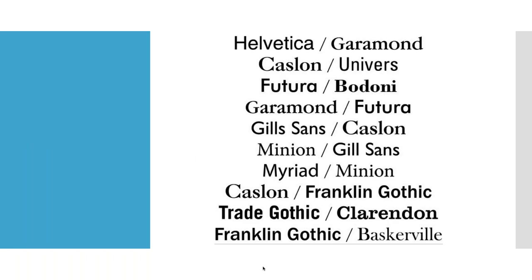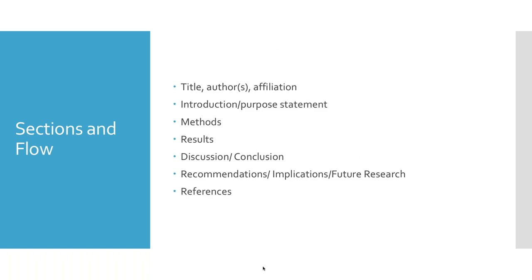One of the biggest mistakes when creating poster presentations is small print. Typical font guidelines: titles at around 90 points, authors, affiliations, and section titles around 60 points, and main text around 30 points. This will vary depending on poster size, but you can Google font guidelines for a specific poster size. Also, some people go overboard with font styles, making it difficult to read at a distance — I've included good professional font combinations that are easy to read on poster presentations.